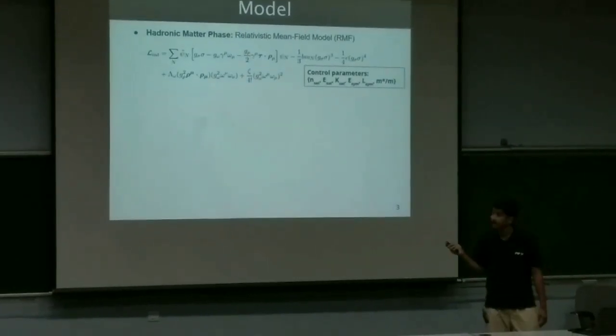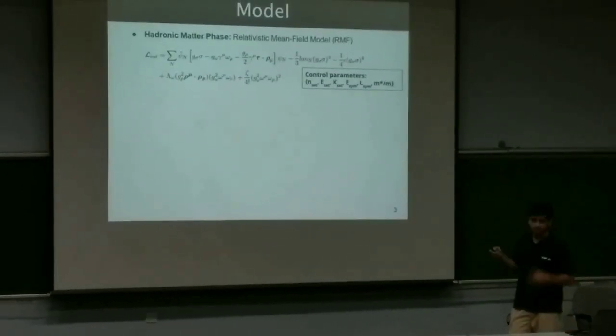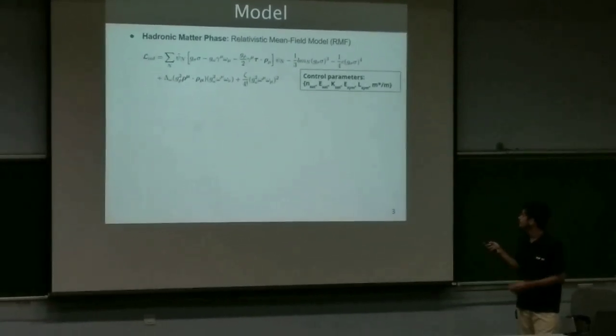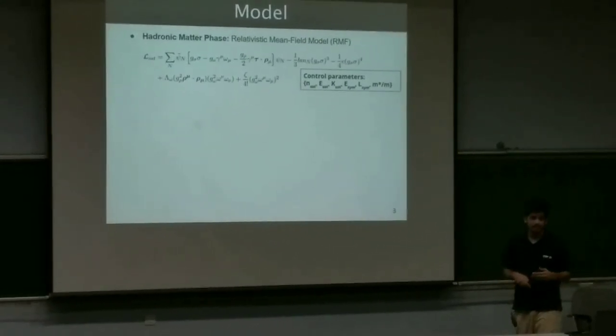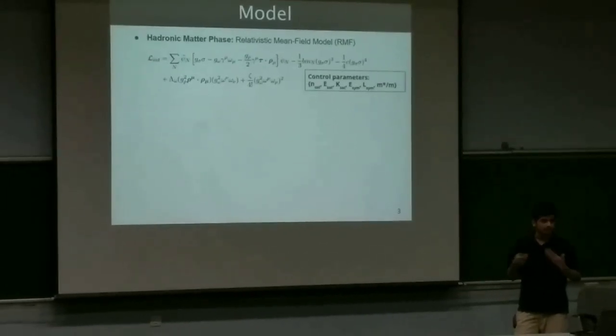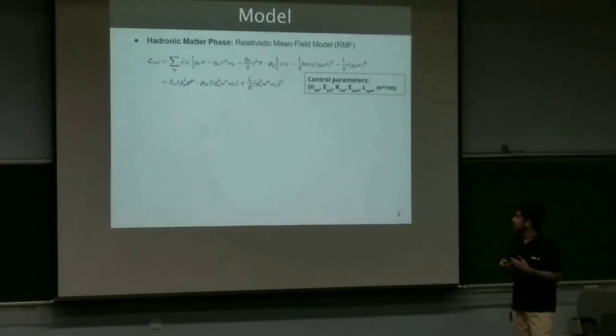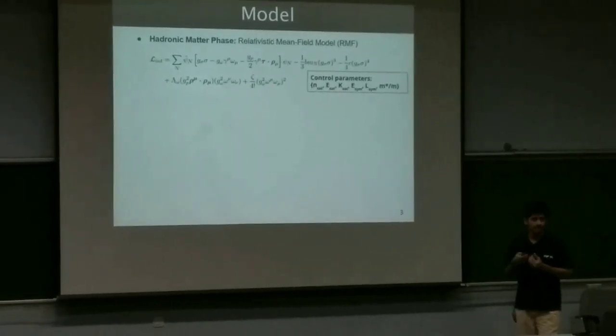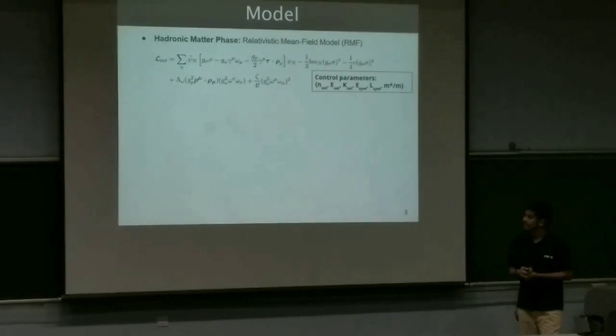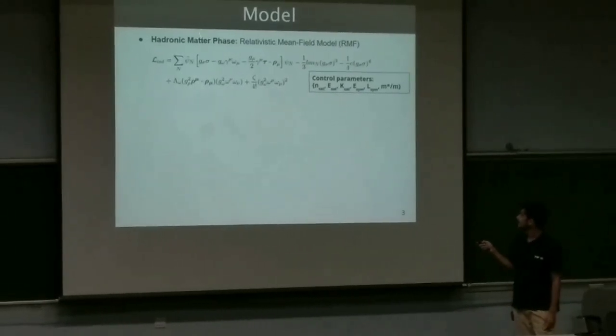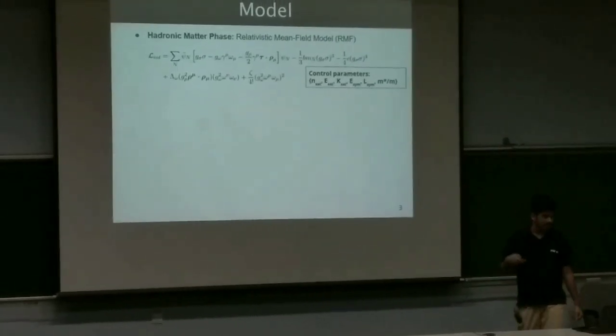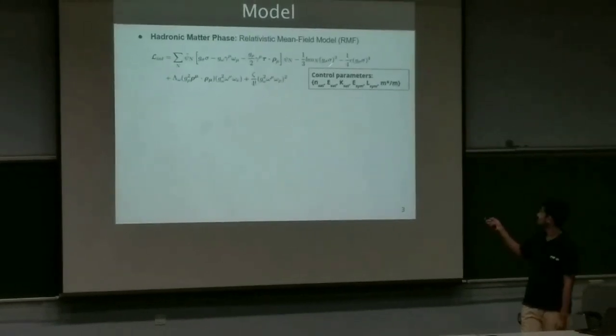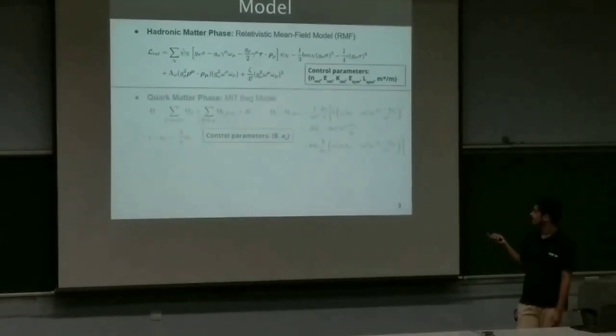So for the hadronic matter, we use the relativistic mean field model, which is the model having nucleons and protons which interact with exchange of mesons. And the fundamental parameters are some of the nuclear parameters which can be measured in lab. From these parameters, we can fit these couplings within the Lagrangian and get the equation of state. So these are the parameters basically which are in our hands.